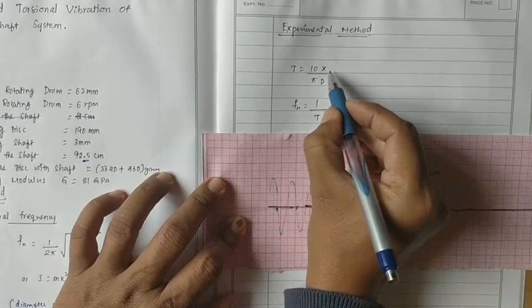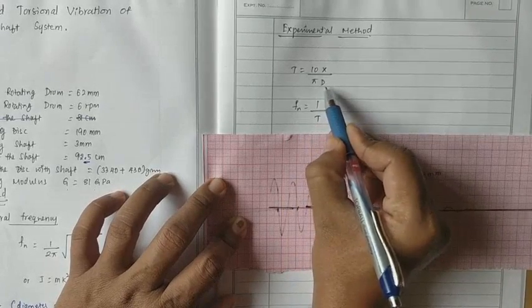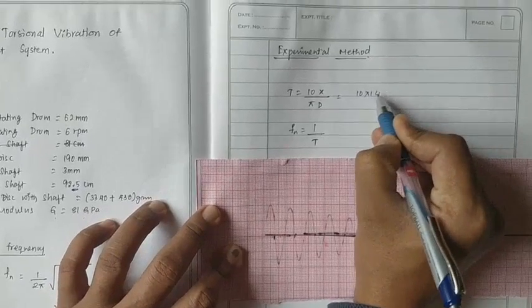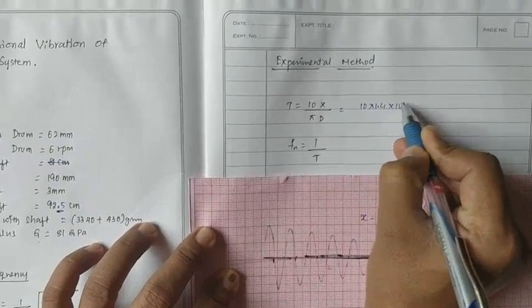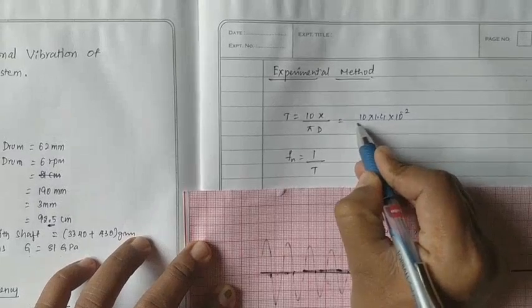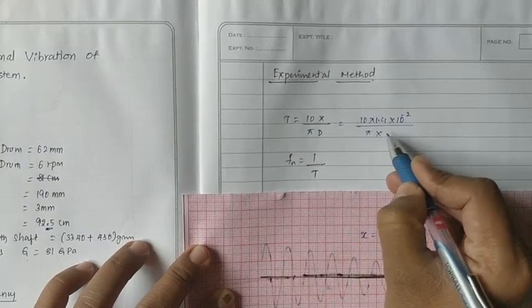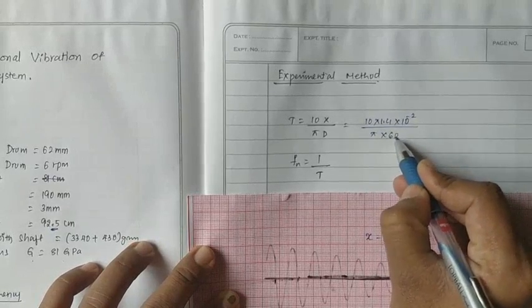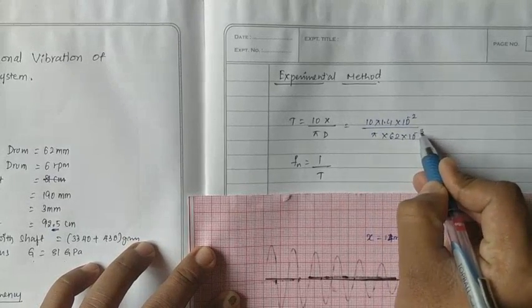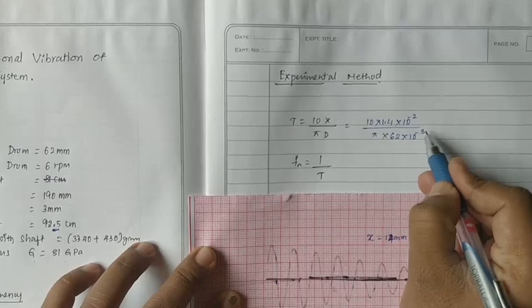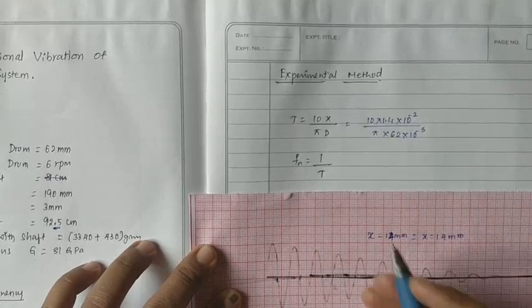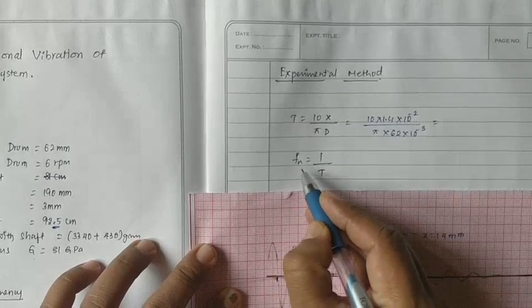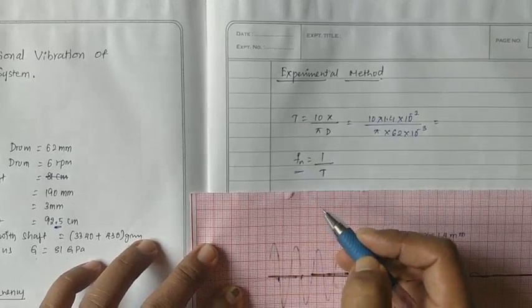We substitute that value over here. And we know diameter. So 10 into 14 mm, 1.4 centimeters. So 1.4 into 10 power minus 2, divided by π into diameter of the drum. Rotating drum is 62 RPM. So 62 into 10 power minus 3. We find out T for this, and then reciprocal of this will give you experimental natural frequency.